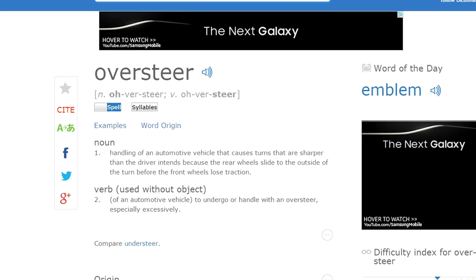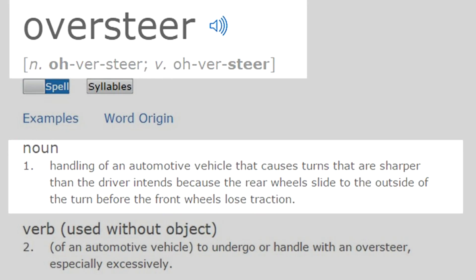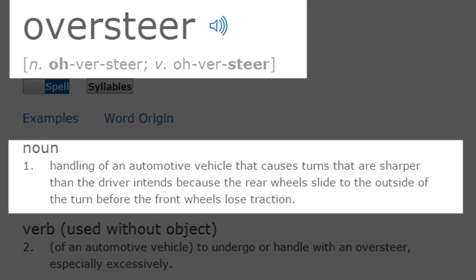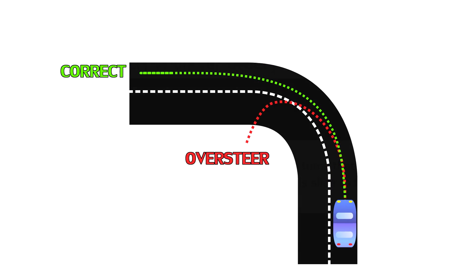Oversteer, which is the opposite and will sometimes be referred to as loose, is a handling characteristic of an automobile that causes turns that are sharper than the driver intends because the rear wheels slide to the outside of the turn before the front wheels lose traction.